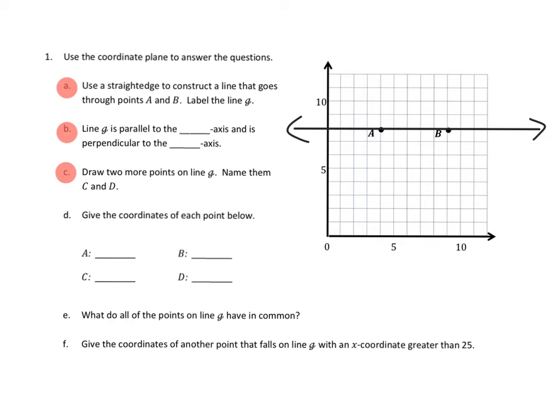There we go, I think that's about right. I'm going to give it some arrowheads there on the end. I'm supposed to label the line G, and I'm using that scripted G, right? So that's line G. Awesome. That's 1A.